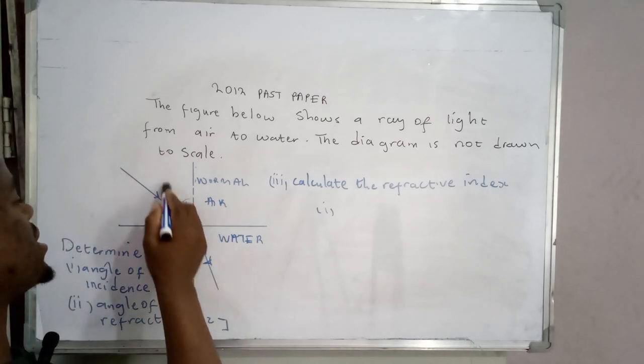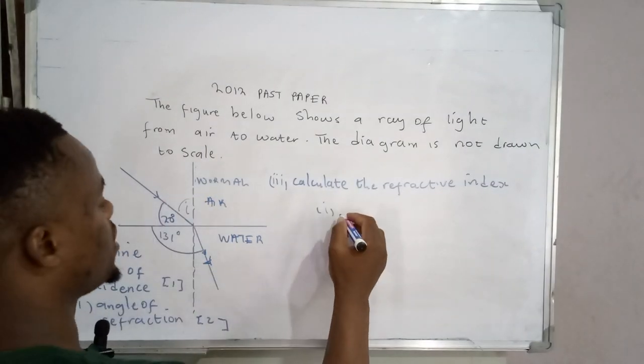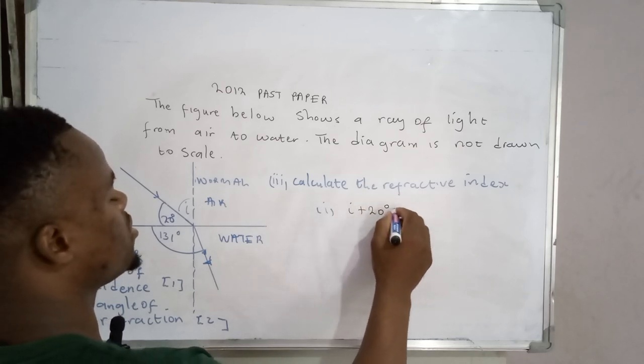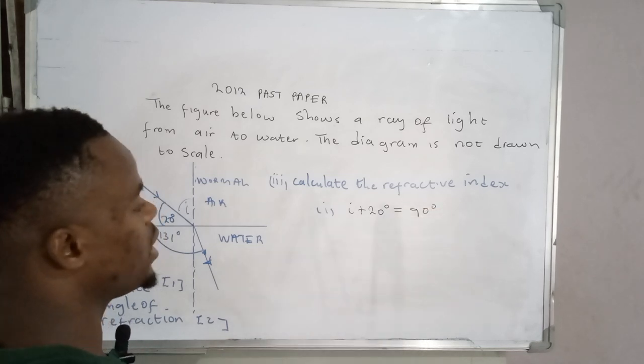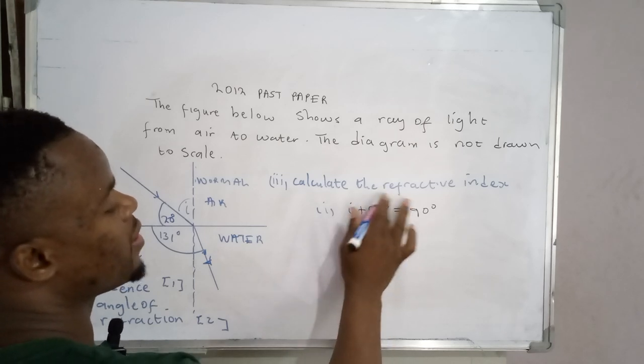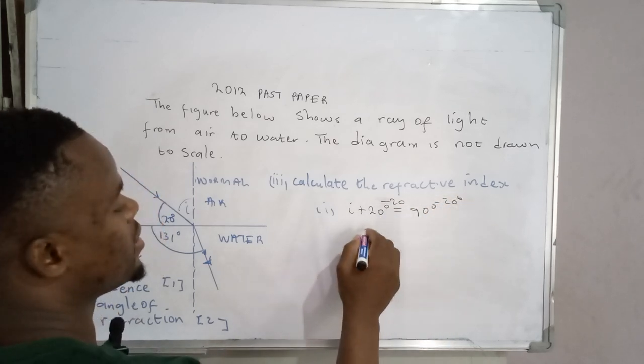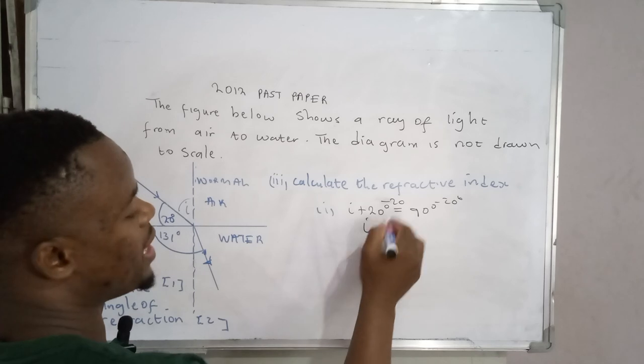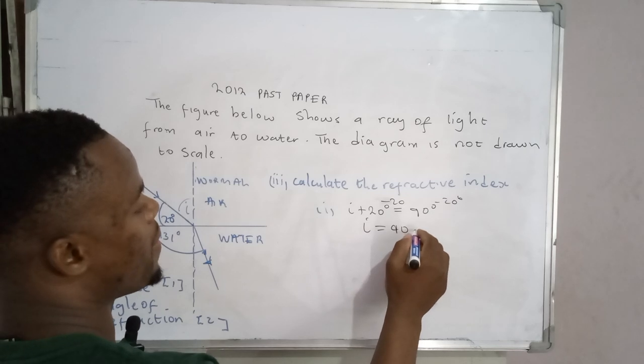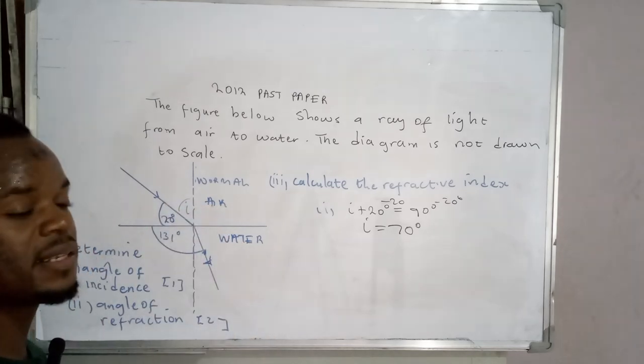Now what we have here—this angle is actually 90 degrees. So for us to determine the angle of incidence, we say angle of incidence plus 20 degrees should give us 90 degrees. We can bring in the additive inverse of this point, which is minus 20 on both sides. So when you add this, it equals zero on one side, which is equal to 90 degrees. So 90 degrees minus 20 gives us 70 degrees. So the angle of incidence is 70 degrees.